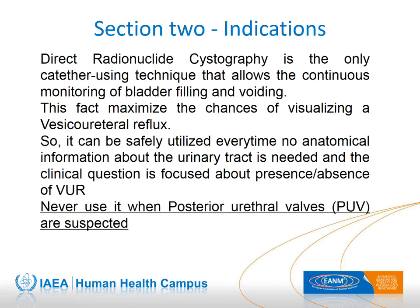DRC has the unique characteristic of allowing continuous monitoring of the whole urinary tract during the scan time without additional radiation exposure. On the other hand, it has poor anatomical definition, especially regarding the urethral status. DRC is a first choice for reflux studies in children with known anatomy, for follow-up in children with known reflux, or for children with a strong clinical suspicion of reflux not visualized at cystourethrography. The use of this test is not agreed upon for children with suspected urethral abnormalities with outflow obstruction, and when posterior urethral valves are suspected, VCUG is mandatory.